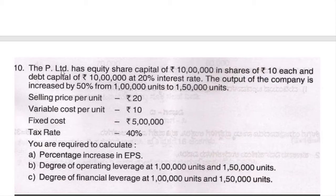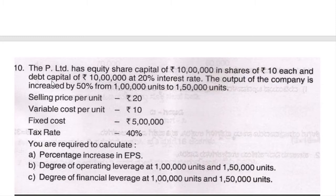P Limited has equity share capital of rupees 10 lakh in shares of rupees 10 each. So the equity capital is rupees 10 lakh and share price is rupees 10, which means the number of shares is 10 lakh divided by 10, giving 1 lakh equity shares. The company also has debt capital of rupees 10 lakh at 20 percent interest rate, meaning they have raised debentures of rupees 10 lakh.